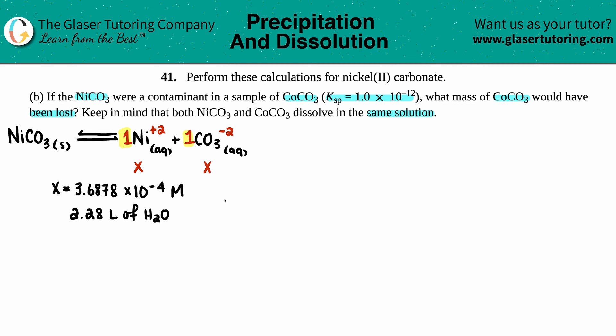The only thing I brought over from part a is the nickel Ksp equation with its molarity. We found that x equals 3.6878 times 10 to the negative fourth molarity, and the volume needed for this saturated solution was 2.28 liters of water. I also want to say that the Ksp value for nickel(II) carbonate is 10 to the negative seventh.